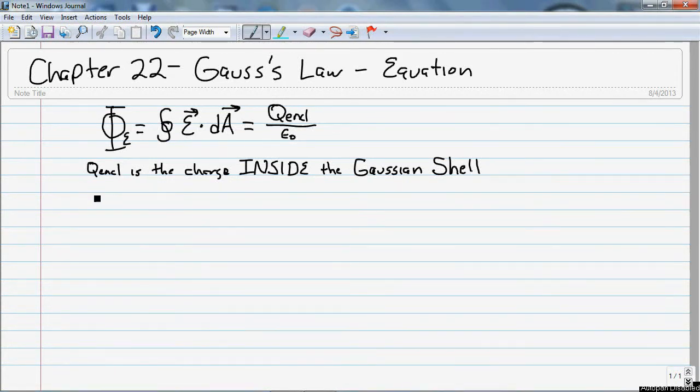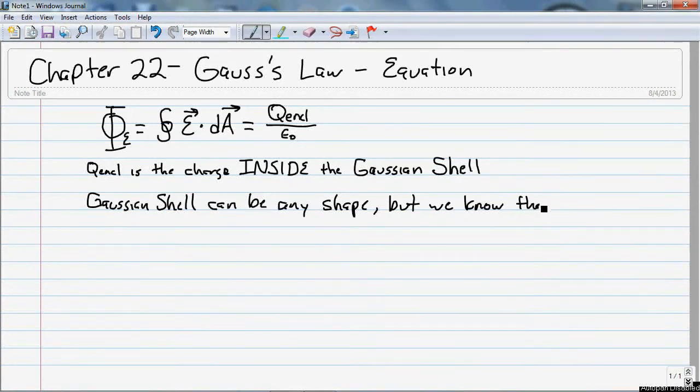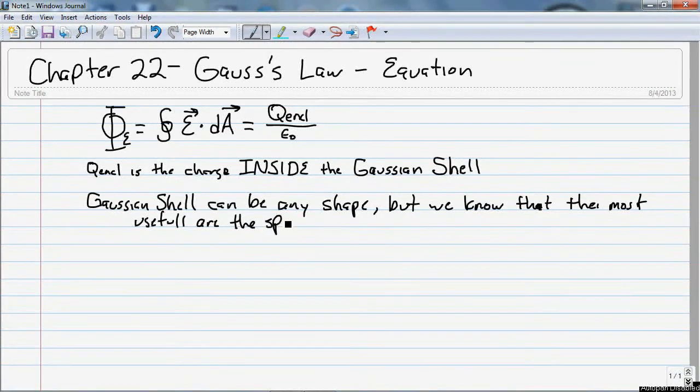That's just the shape around the charge. Now, the Gaussian shell can be any shape. But from the last video, we know that the most useful are the sphere and the cylinder.